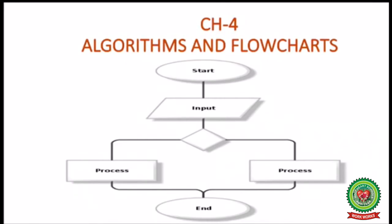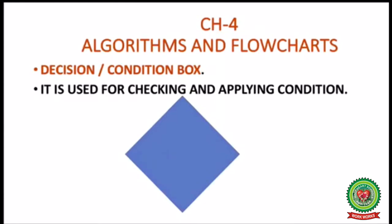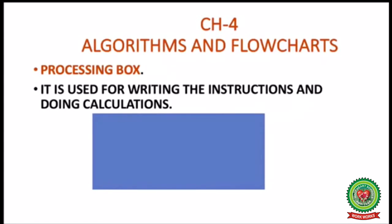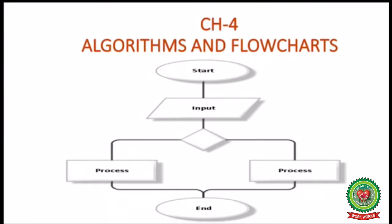The decision-condition box is used for checking and applying any condition. After the input box, we have the decision box where we write a condition and check if it is true or false. The processing box is used for writing instructions and doing calculations. After the decision box, there are two process boxes — if the condition is true, the process box on the left executes; if false, the process box on the right executes.